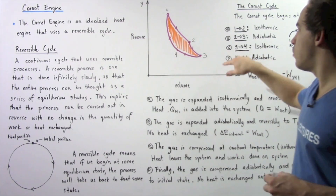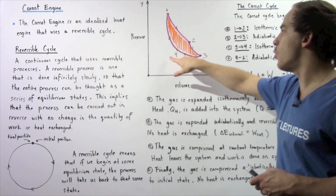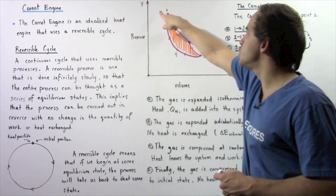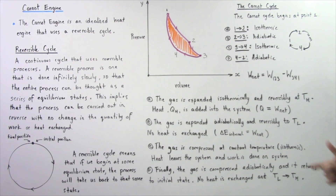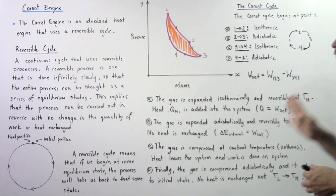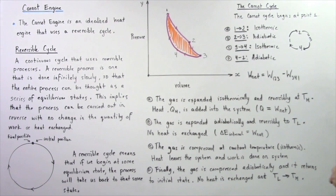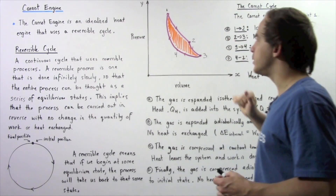Going from point three to point four, the gas is compressed in an isothermal process. And going from point four back to point one is once again an adiabatic process. So the Carnot cycle is composed of four processes: two isothermal and two adiabatic. We go from point one to two to three to four and back to point one.